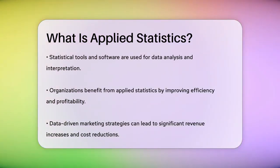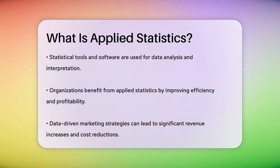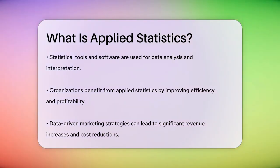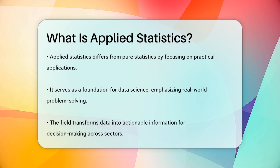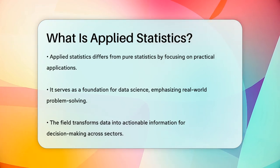This process helps organizations increase efficiency and profitability. For example, companies that use data-driven marketing strategies have seen up to 20% increases in revenue and 30% decreases in spending. Applied Statistics is different from pure statistics because it focuses on practical applications rather than just the mathematical aspects. It's about using statistical methods to address real-world problems and find concrete solutions. This field is so important that it's often referred to as the foundation upon which data science is built.